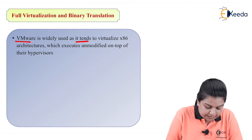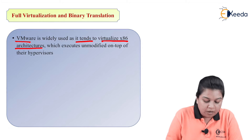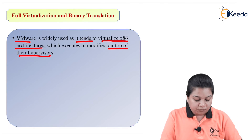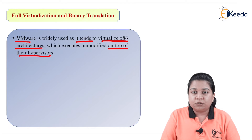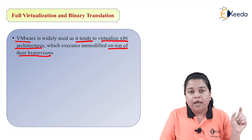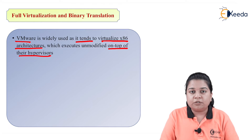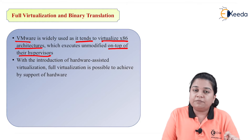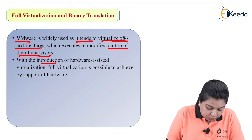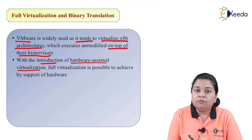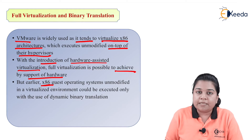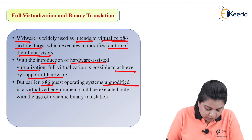VMware is widely used as it virtualizes x86 architectures which execute unmodified on top of their hypervisors. With the introduction of hardware-assisted virtualization, full virtualization is possible to achieve by the support of the hardware itself.